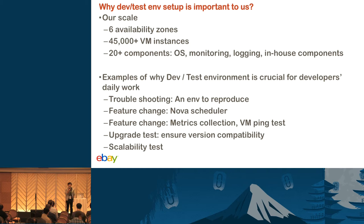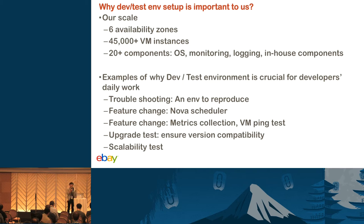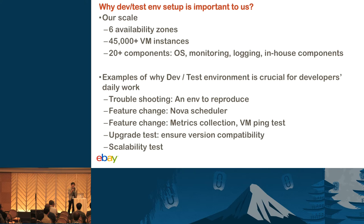Dev and test environment is pretty critical for the developers and quality engineers. For example, when you have some issues running in the site, how can you reproduce? You probably want the same environment as you have in production. Or if you want to do some new features, how can you make sure what you have running in the dev environment can also run in production? And we have OpenStack releases twice per year — how can we make sure the version is backward compatible during upgrading?